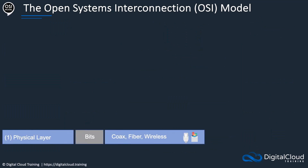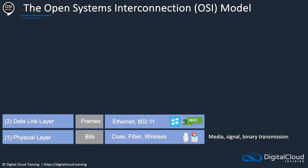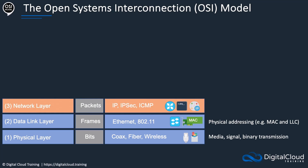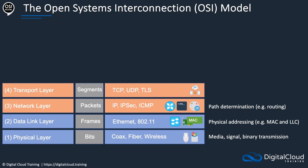Now let's look at all seven layers. At the bottom, layer one is the physical layer — physical infrastructure like cables and networking devices, communicating using bits, ones and zeros. We've got coaxial, fiber, wireless technology, media, signal, and binary transmission. At the data link layer we have frames — Ethernet, 802.11 wireless, media access control, physical addressing with MAC and LLC. Then the network layer deals with packets: IP, IPsec, and ICMP — so we can do things like ping at layer three, with path determination and routing. Then the transport layer has segments: TCP, UDP, and TLS — internet connections and, in some cases, reliability, though not with UDP.